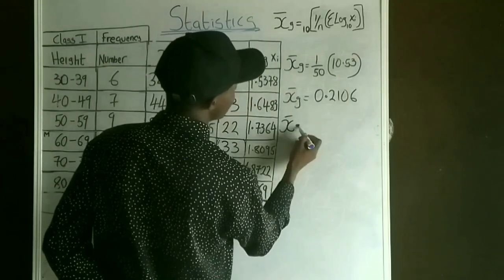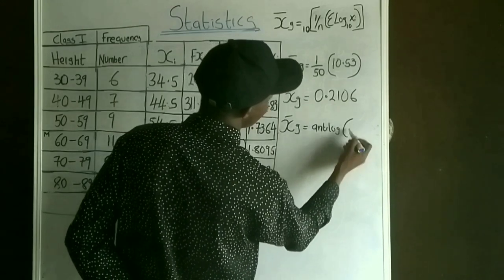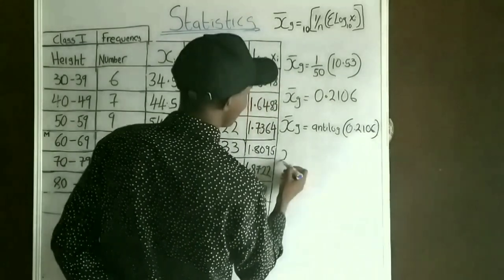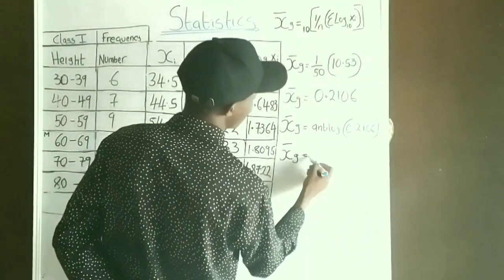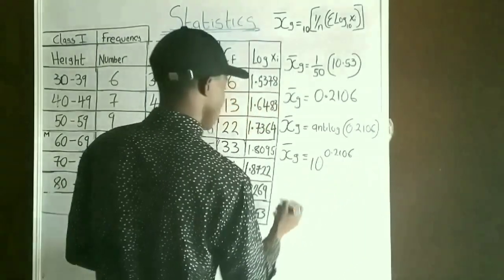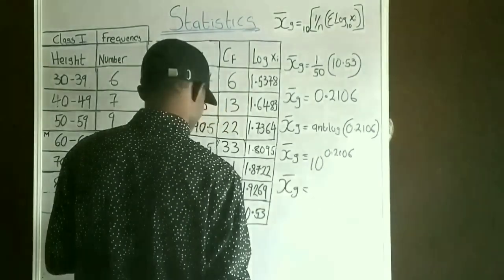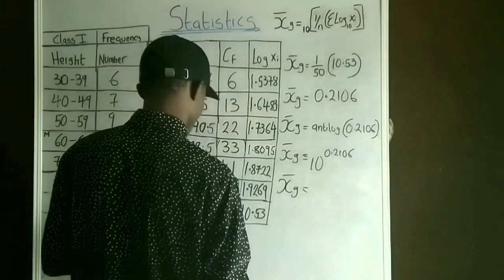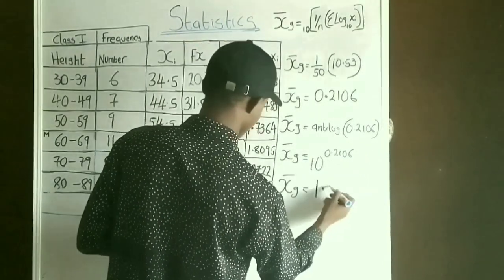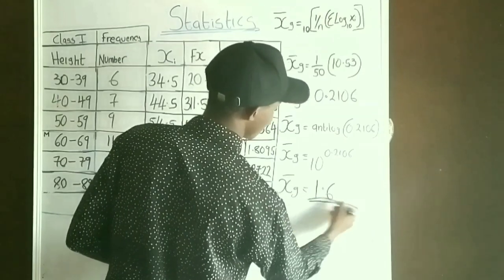The geometric mean equals the antilog of 0.2106, which is 10 raised to the power of 0.2106. Using a calculator, the geometric mean equals approximately 1.6.